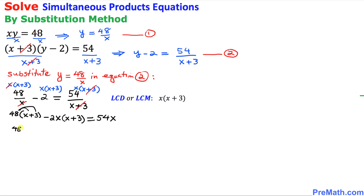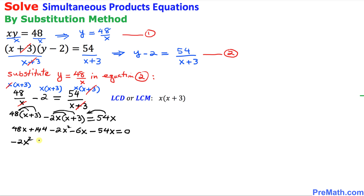Now let's distribute. 48 times x plus 3 becomes 48x plus 144. Distributing on the left gives negative 2x squared minus 6x. Moving 54x to the left side gives us negative 2x squared plus 48x minus 6x minus 54x plus 144 equals 0, which combines to negative 2x squared minus 12x plus 144 equals 0.